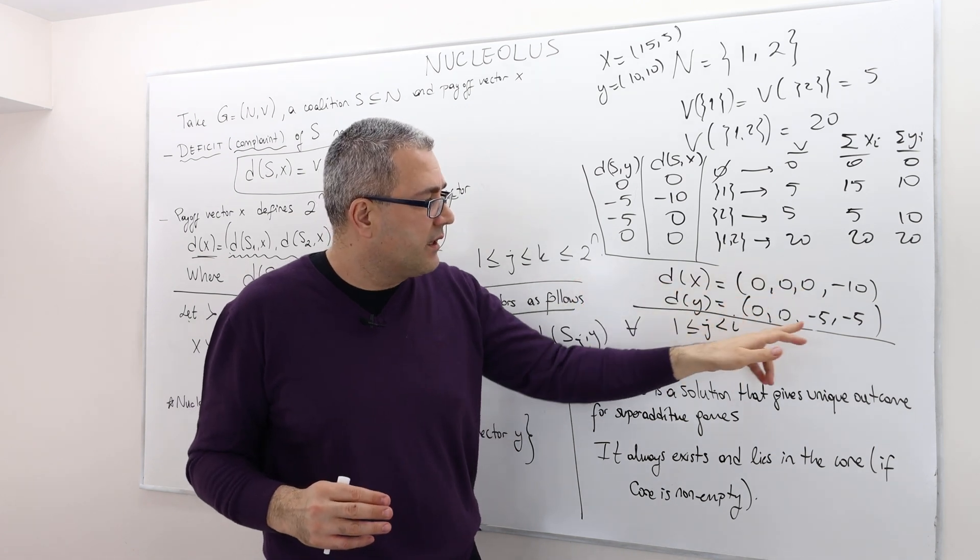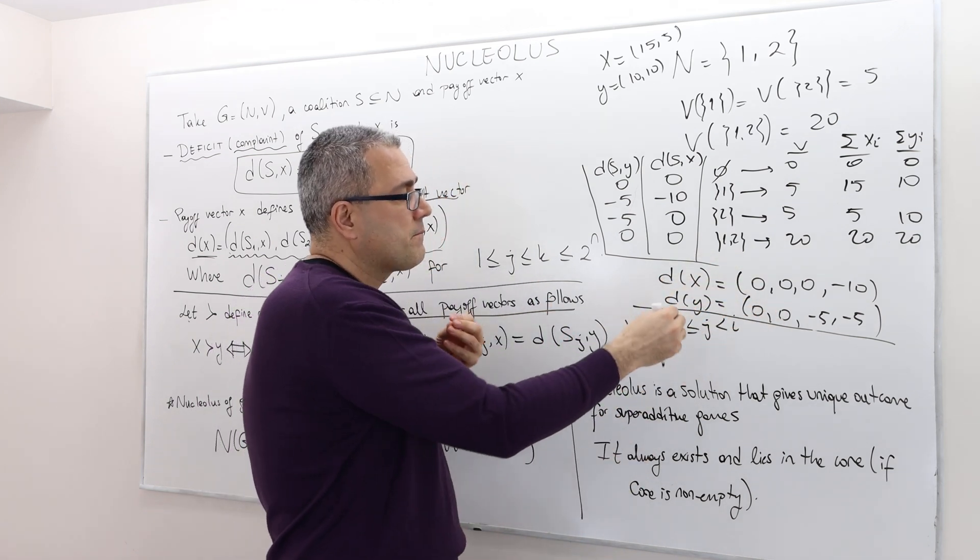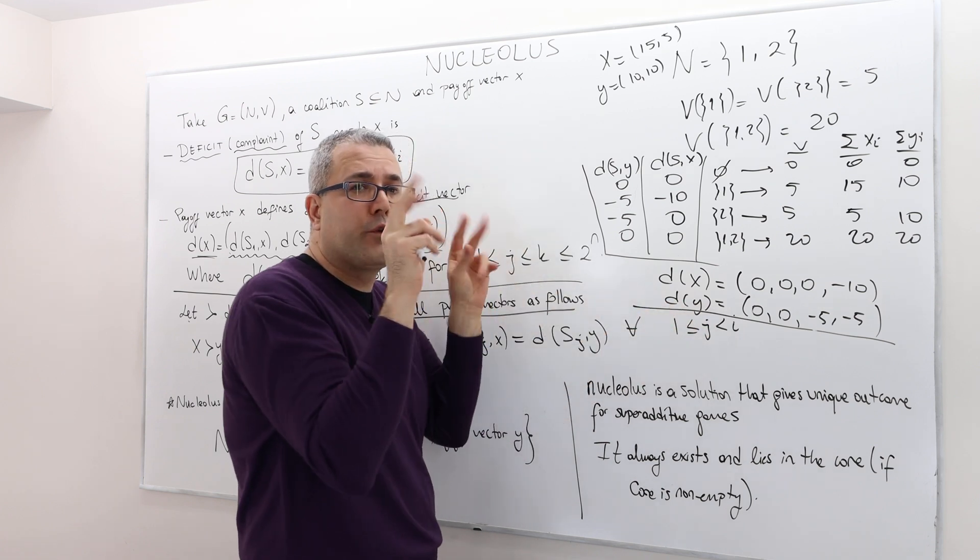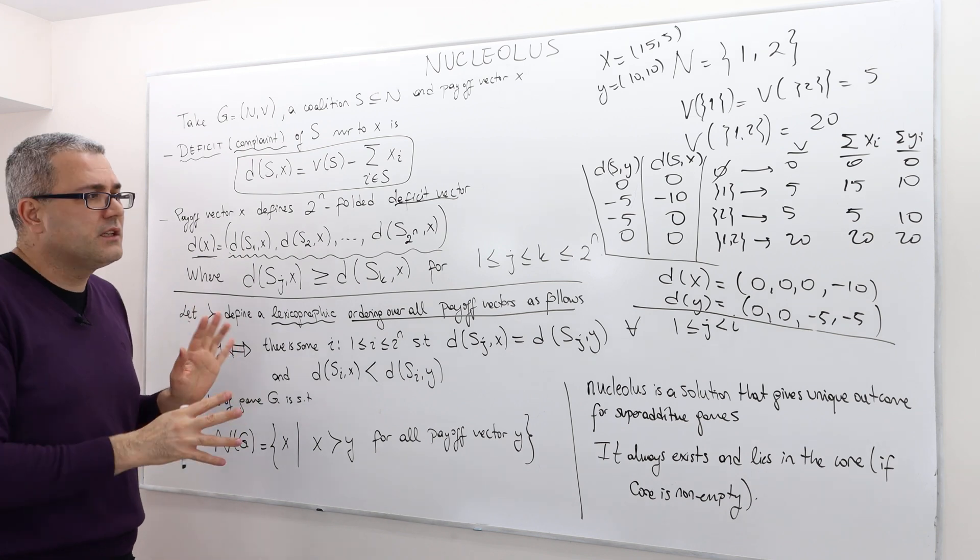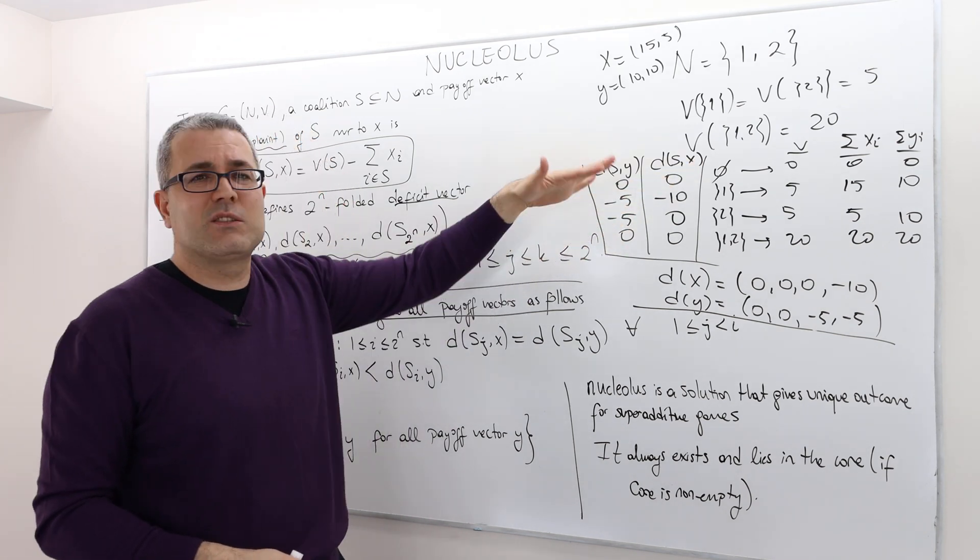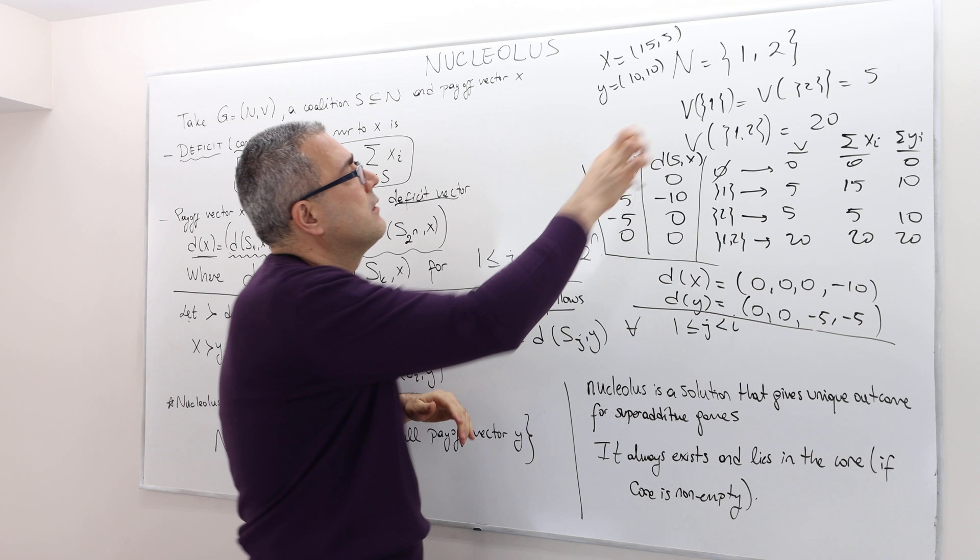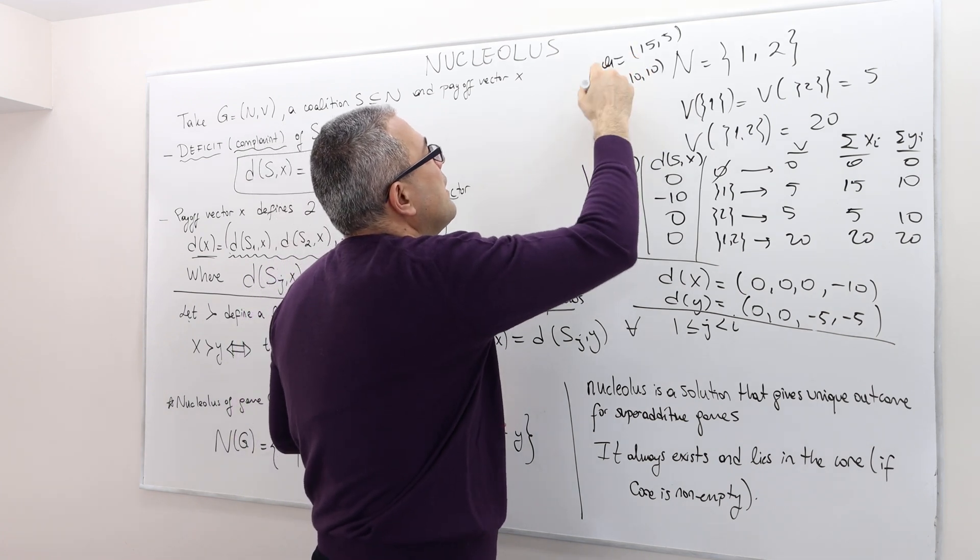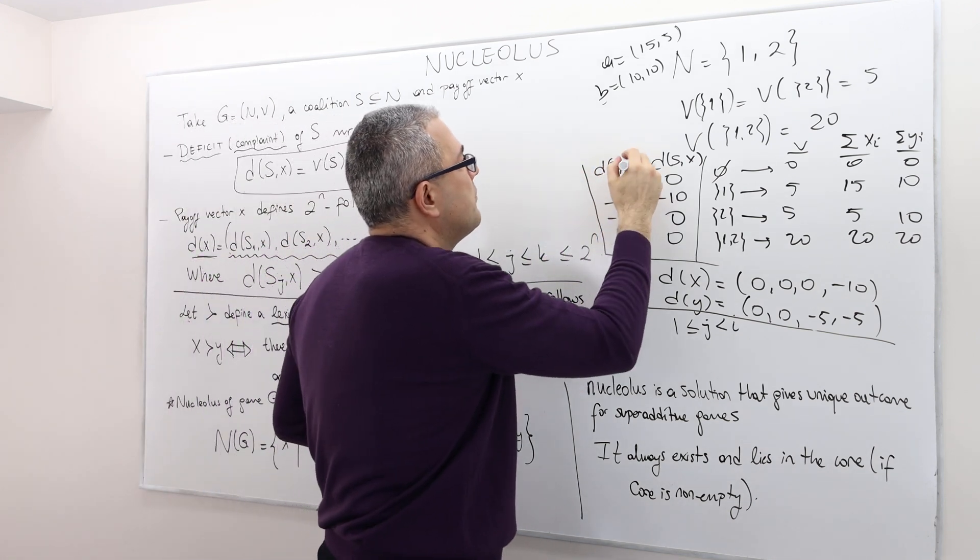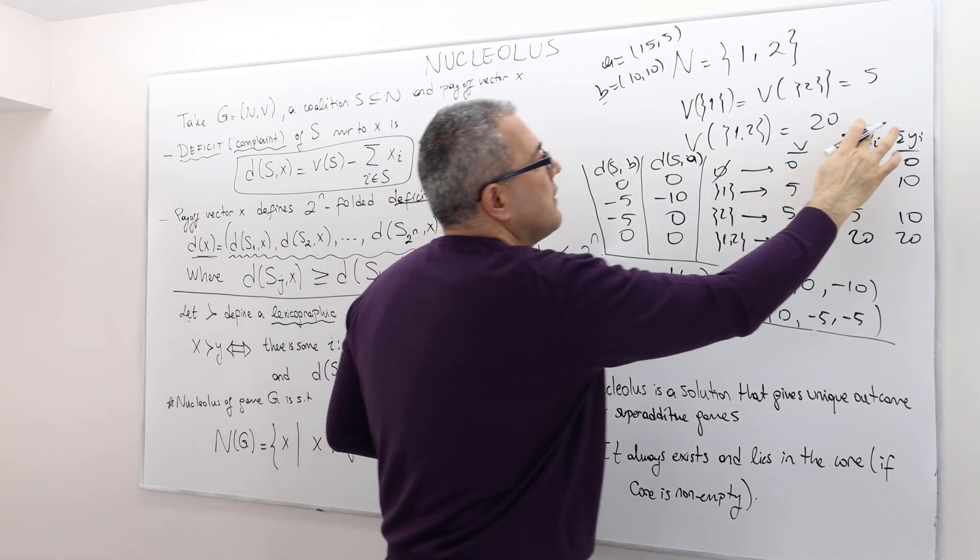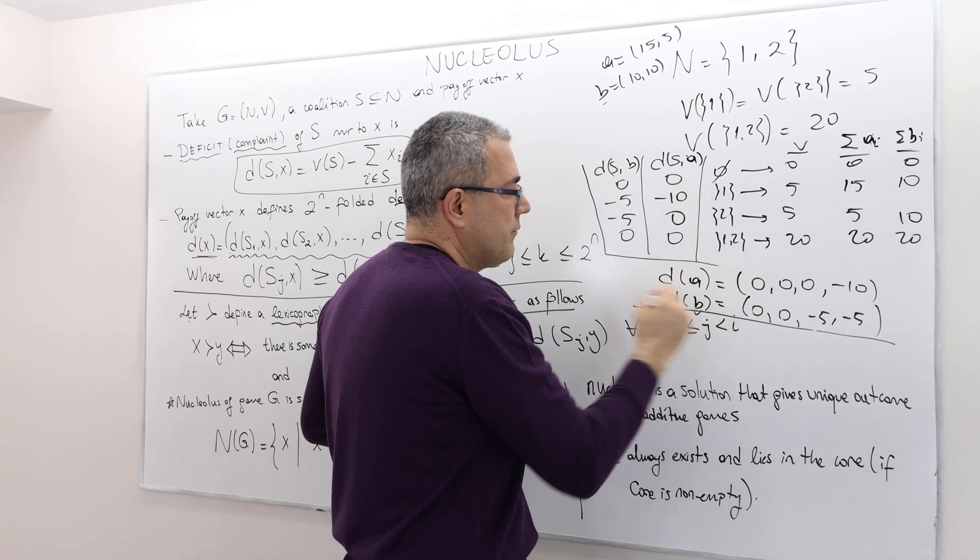If the complaint under x is higher than complaint under y, then I say the payoff vector y is preferred to x. Here, I am using a different notation. Maybe I should have used, instead of xy, I should call them ab. So let's call them a and b. This is a generic definition. So this is b. This is a. So this is a i. This is bi. And so this is da and db.